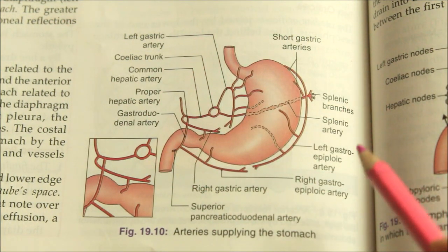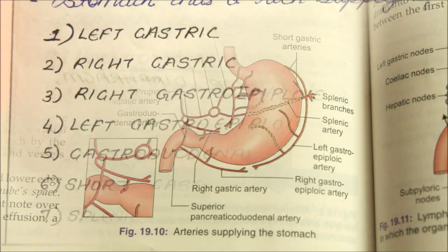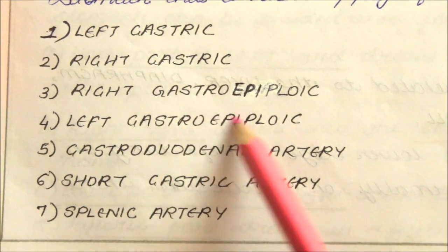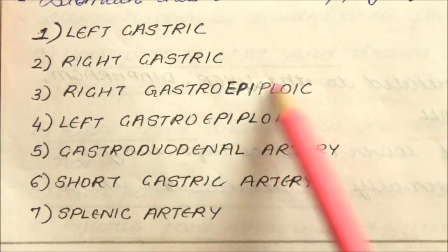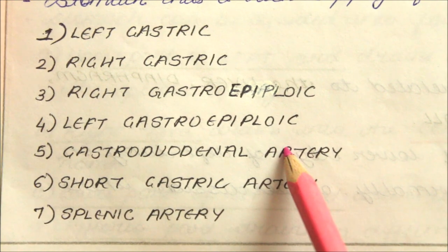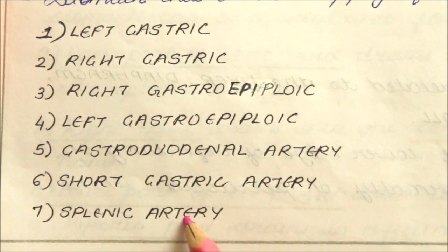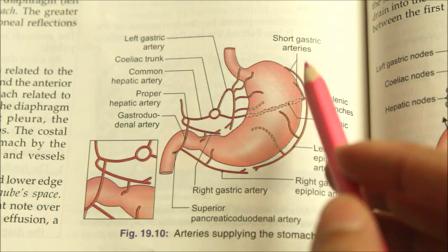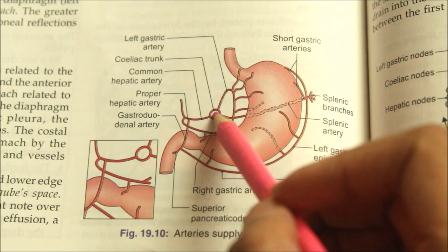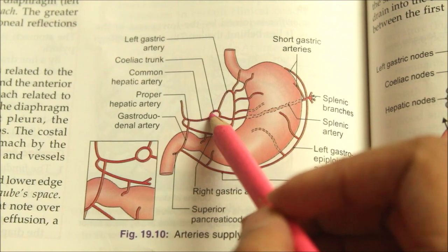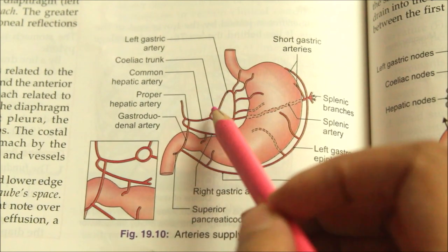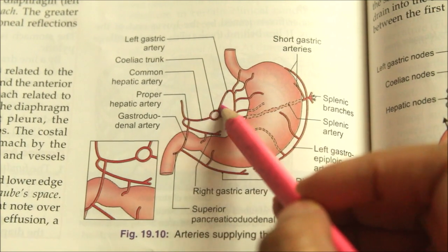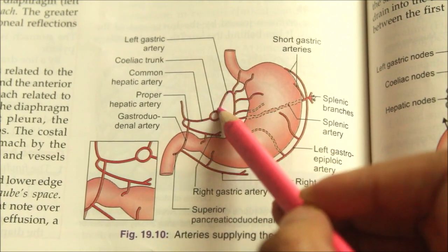For the blood supply of the stomach, there are seven blood vessels: the left gastric, right gastric, left gastroepiploic, right gastroepiploic, gastroduodenal artery, short gastric artery, and splenic artery. The celiac trunk, a branch of the abdominal aorta, gives three branches: the left gastric artery, the splenic artery, and the common hepatic artery.